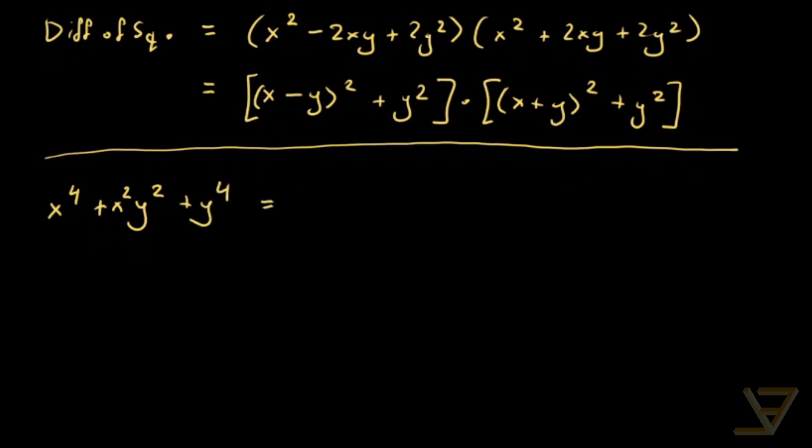And what we do is that we add and subtract x squared y squared. So we get x to the power of 4 plus 2x squared y squared plus y to the power of 4 minus x squared y squared.